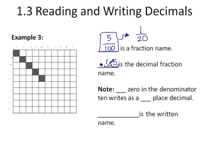And then because you can't leave the space empty you put in a zero as a placeholder. So point zero five is the correct decimal for this.